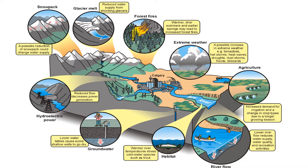Starting with the snowpack: snowpacks provide a huge amount of fresh water for many people around the world — not so much in the UK, but certainly in places like Bangladesh and India, where snow from the Himalayas melts and provides water for rivers like the Ganges and the Brahmaputra. These are really vital for people to live and have access to clean, safe drinking water. If temperatures increase and snowpacks reduce, so will access to drinking water.